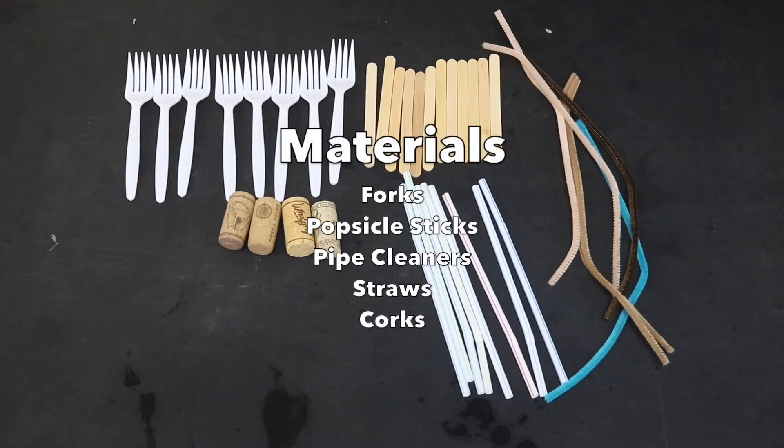For my backscratcher, I will be using forks, popsicle sticks, pipe cleaners, straws, and corks. I will also be using scissors and a hot glue gun, but if you don't have a hot glue gun, you may use glue or tape.